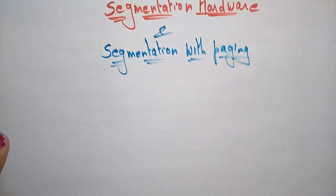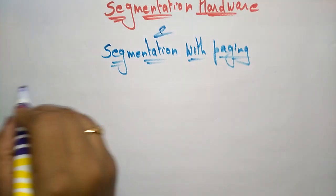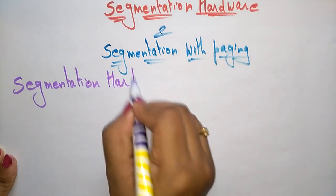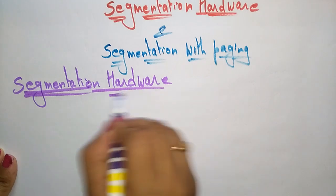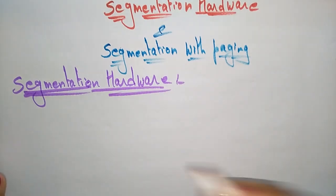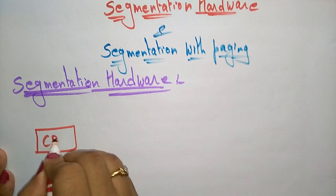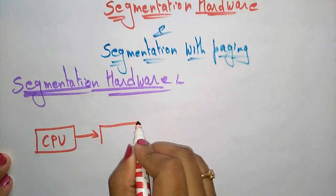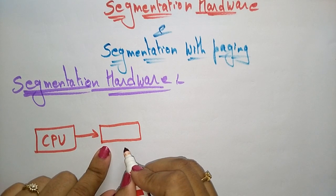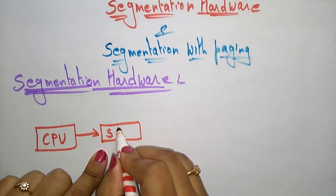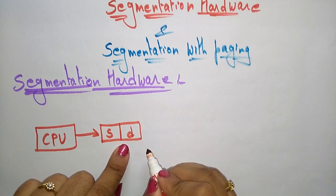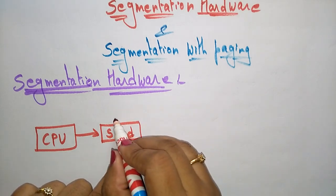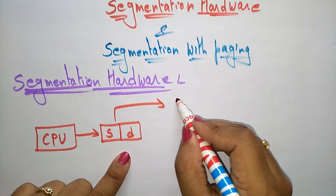Now first let us look at the segmentation hardware. The CPU sends data in the form of a logical address. Each segment holds the logical address, that is a segment name plus offset, where D is the offset. Each segment and offset will be stored in the form of a segment table.